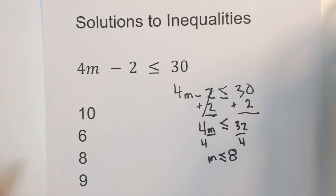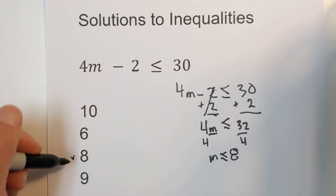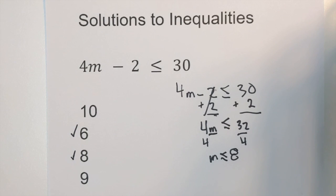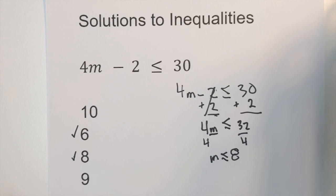Now what we need to do is we have a couple of choices. Which of these satisfy this less than or equal to 8? Well 8 does and 6 does. So our solution would be 8 and 6 because they're both less than or equal to 8.